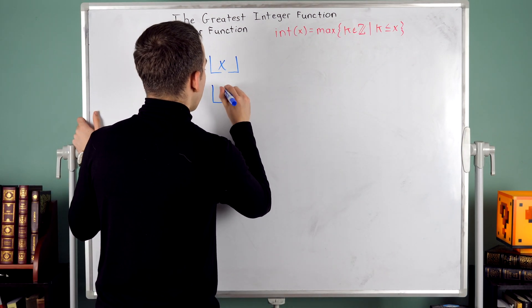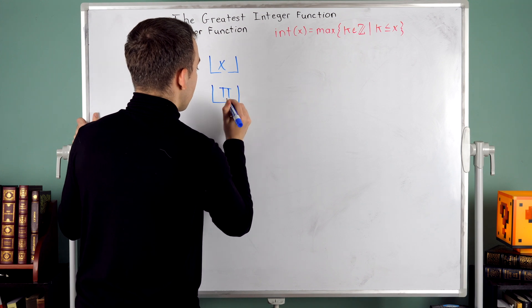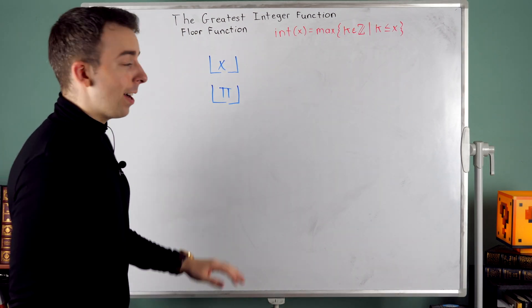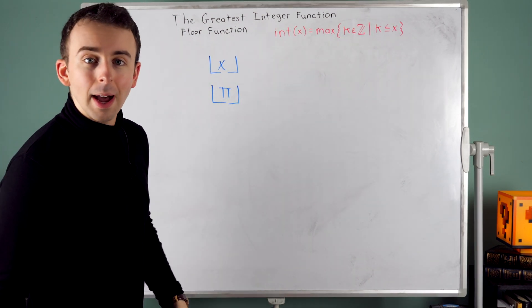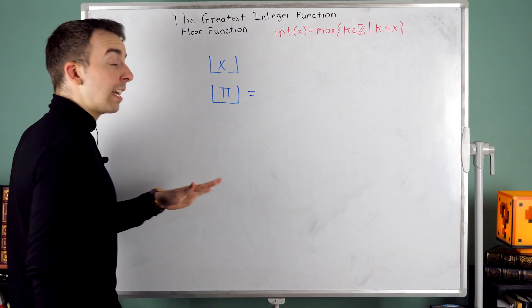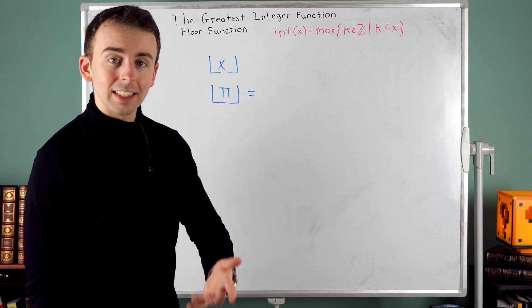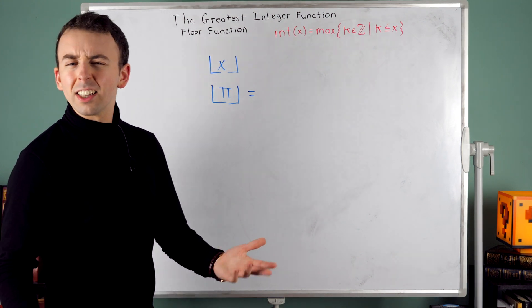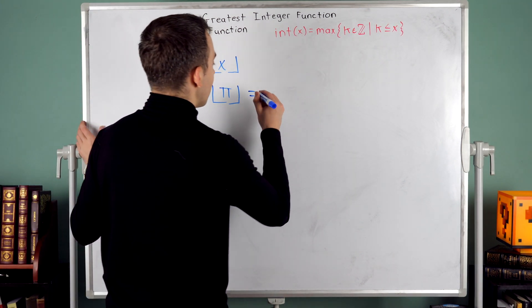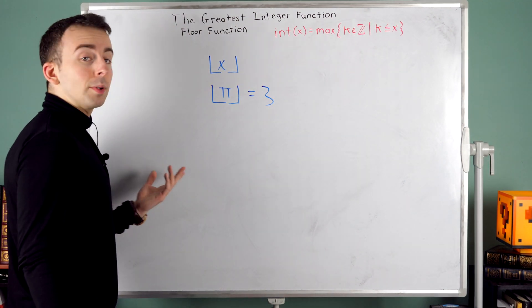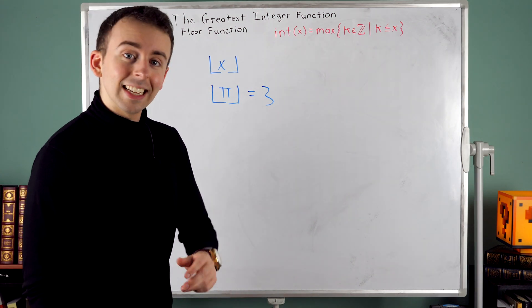So the floor or greatest integer function evaluated at pi, floor of pi, int of pi, however you want to say it. What's this? It rounds pi down to the nearest integer. Pi is a little over three. So this is equal to three, which might please some of my engineers in the audience.